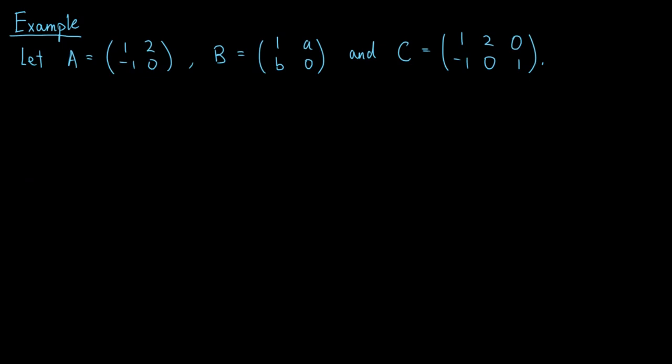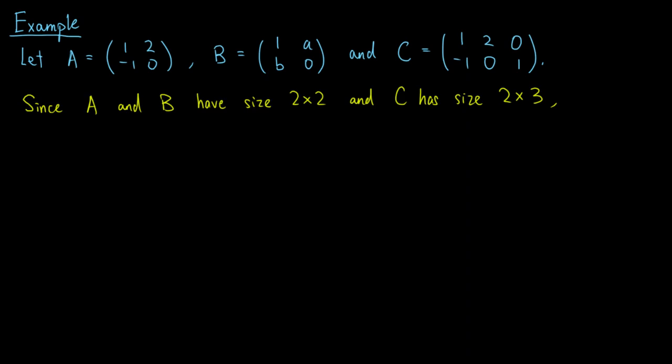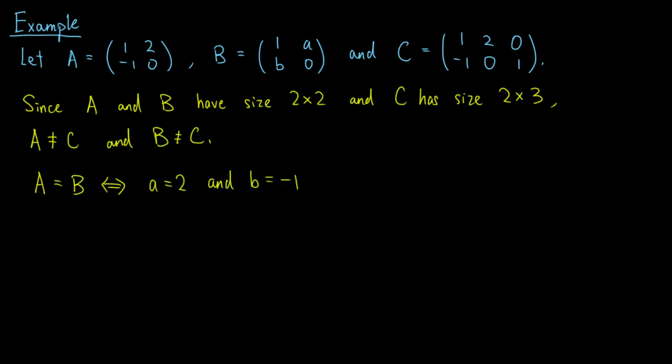Let's look at an example. Suppose A, B, and C are the matrices as shown. Notice that A and B have size 2 by 2, but C has size 2 by 3, so A is not equal to C, and B is not equal to C. For A and B, two pairs of corresponding entries are already equal, namely 1 and 0. If we want the matrices to be equal, we require that the other two pairs of corresponding entries are also equal, that is, A equals 2 and B equals negative 1.